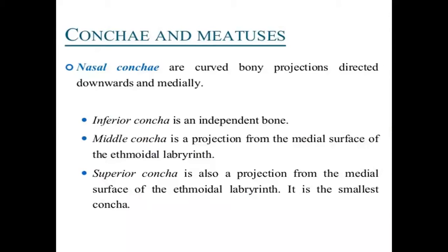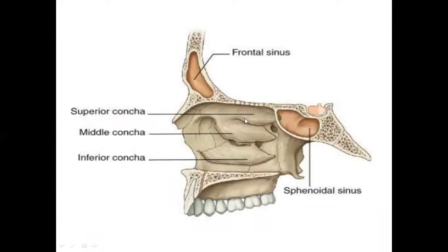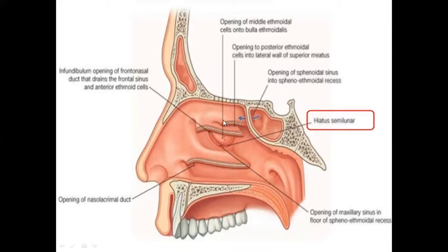Next is about the conchae and meatus. Conchae are curved bony projections; they are the inferior nasal concha, middle nasal concha, and superior nasal concha. The space beneath each concha is called the meatus. The inferior nasal concha is an independent bone, while the superior and middle nasal conchae are projections from the medial surface of the labyrinthine part of the ethmoid bone. There are three meatus: inferior meatus, middle meatus, and superior meatus.